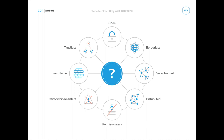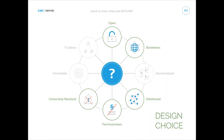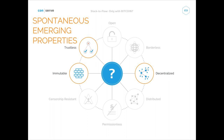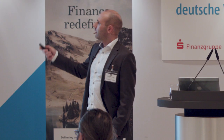Bitcoin also has censorship resistance. What you'll realize in this space is that everybody writes these properties into their white paper. But only some of them — openness, borderless, distributed — can be a design choice. You can design your cryptocurrency to be open or closed, borderless or country-limited, distributed or centralized, permissionless or with KYC mechanisms. But other properties like decentralization, immutability, and trustlessness are spontaneous emerging properties. You can copy Bitcoin but you won't copy all eight properties.